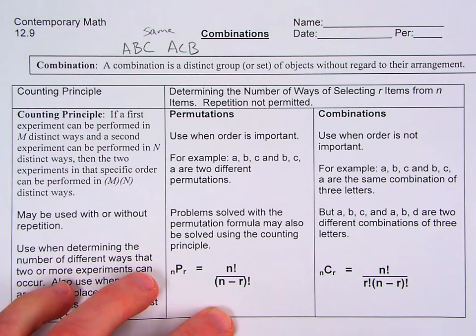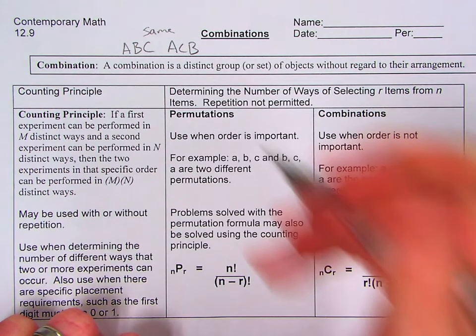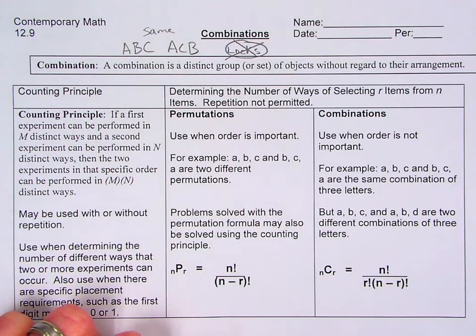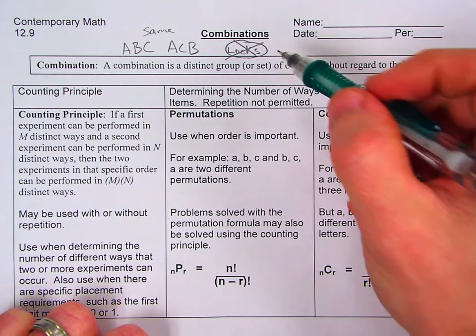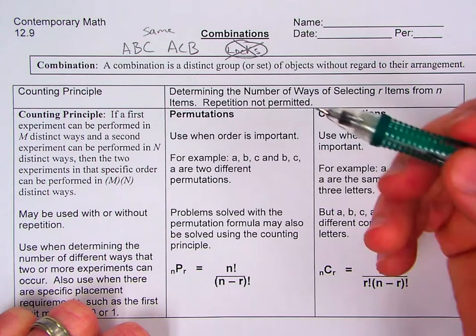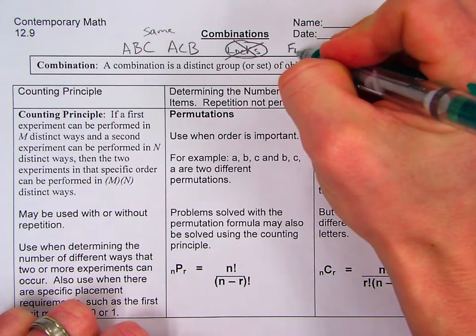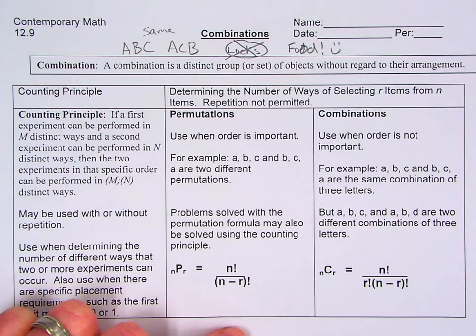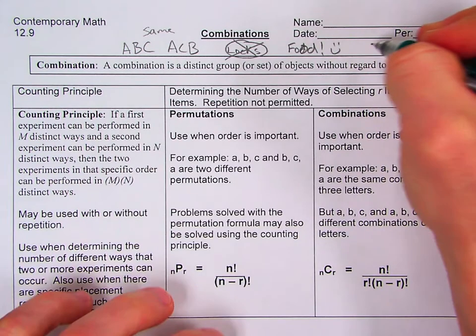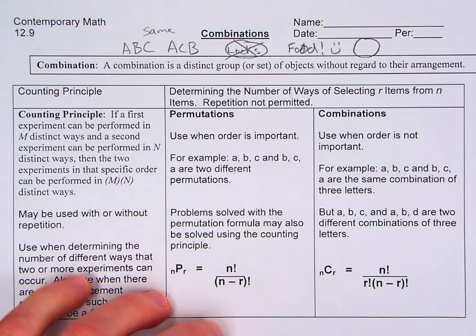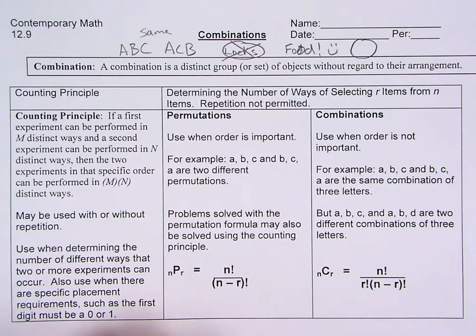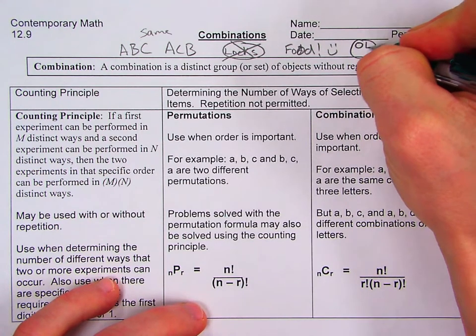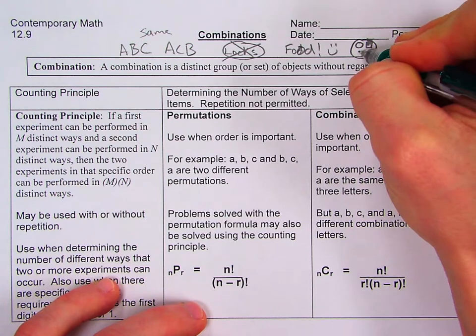So when we think about combinations, we don't want to think about combination locks, because the order that you put your combo in makes a difference. So it's not really a combination lock, but it's really a permutation lock. Instead, what we do want to think about is food. Which is a good thing. So when you think about your plate of food, if you order a combo number one, it's just a burger, a fries, and a drink. So you got your burger, and then you got your fries, and then you have your soda.